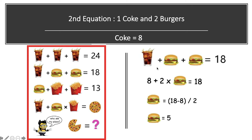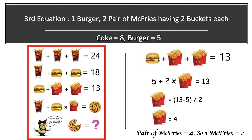In the second equation we have one coke glass plus two burgers, and the sum is equal to 18. Substituting the value of coke from the first equation: 8 + 2 × burger = 18, so burger = (18 − 8) ÷ 2 = 5. By the end of the second equation, one coke equals 8 and one burger equals 5.